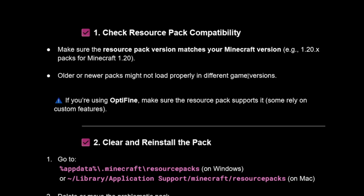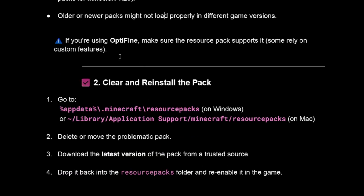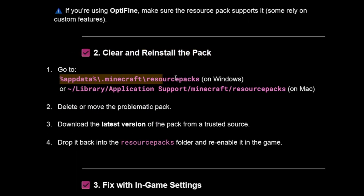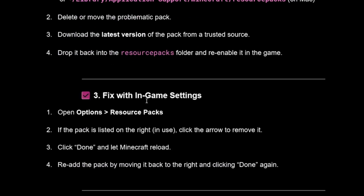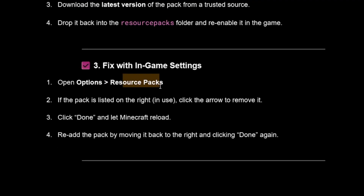You can also clear and reinstall the pack. Go to your AppData folder in the file manager on Windows, or on Mac go to Library > Application Support > Minecraft > resource packs. Delete or move the problematic pack, then download the latest version from a trusted source and drop it into the resource packs folder. Then try to enable it in-game.